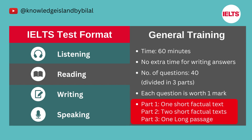In General Training Reading, the only difference is the length of the three passages you will encounter. These passages are usually materials that you are likely to encounter on a daily basis in an English-speaking environment. Part one may contain two or three short texts or several shorter texts — for example, notices, advertisements, and timetables. Part two comprises two texts that focus on the workplace context, and in part three there is one long text with emphasis on descriptive and instructive rather than argumentative texts.